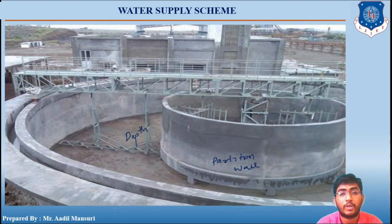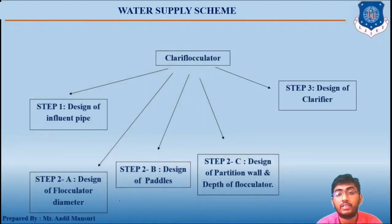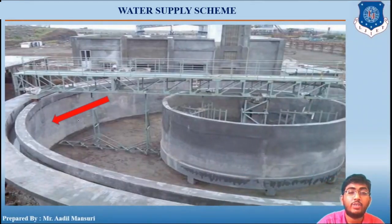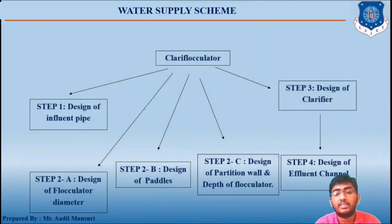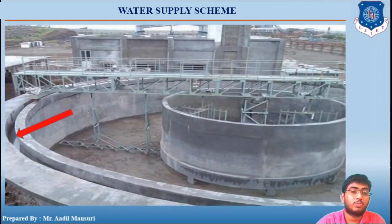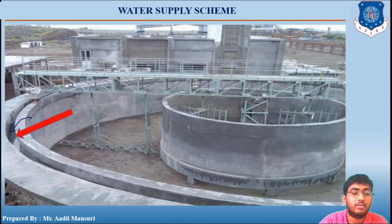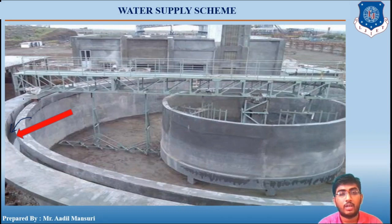Step 3 is design of the clarifier - we need to design the diameter of the clarifier. Step 4 is design of the effluent channel, from which water will come out of the clarifier and be supplied to the rapid sand filter via the effluent channel.